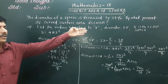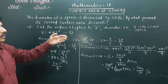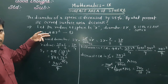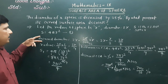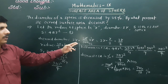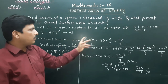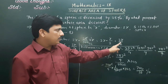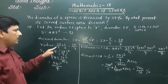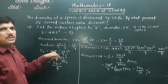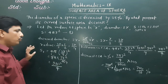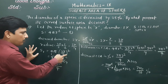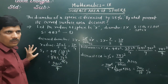To recap: let radius be R and diameter 2R. S = 4πR². After 25% decrease, new diameter = 3R/2, so new radius = 3R/4. New CSA = 9πR²/4. Difference = 7πR²/4. Percentage decrease = 43.75%.